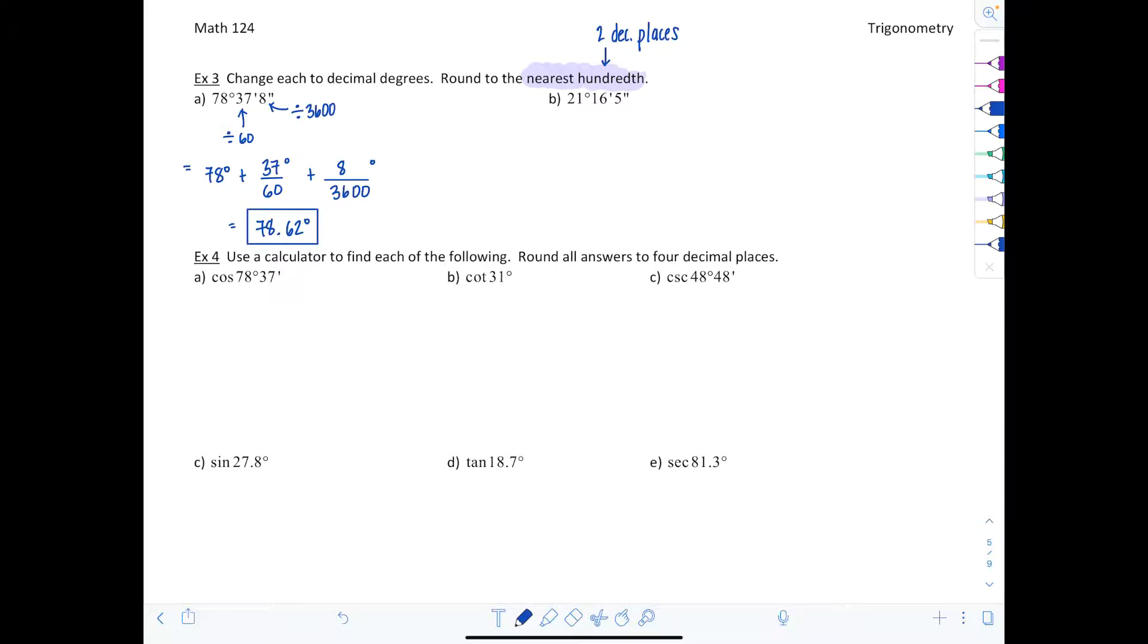One more example like this. We have 21 degrees 16 minutes 5 seconds. I'm going to leave 21 degrees alone. I take 16 divide that by 60 to convert it to degrees, plus 5 divided by 3600 degrees. In your calculator punch in 21 plus 16 divided by 60 plus 5 divided by 3600. Add it all together and you should end up with 21.27 degrees after you round.